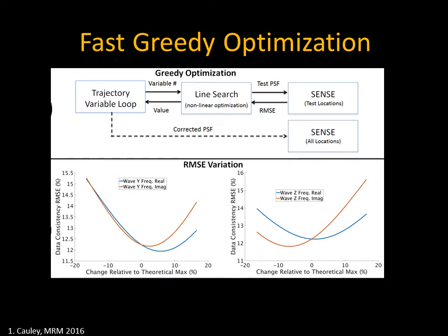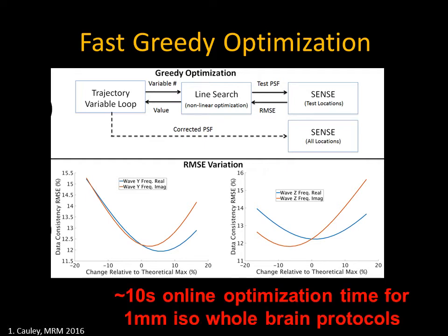To efficiently optimize these variables, we use a fast greedy approach where we go through each variable sequentially and perform a nonlinear line search. At each evaluation point, we solve the entire SENSE problem across those test locations to see if we're improving the data consistency error. Once we've reached a local minimum for that variable, we move on to the next variable until convergence.